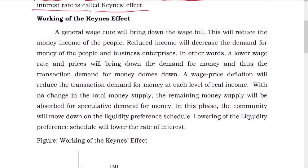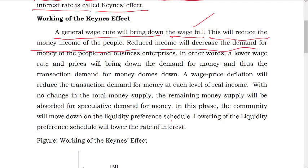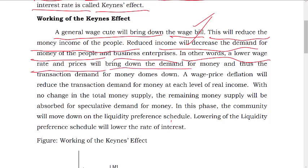The working of Keynes's Effect: a general wage cut will bring down the wage bill. This will reduce the money income of the people. Reduced income will decrease the demand for money of the people and business enterprises. In other words, lower wage rates and prices will bring down the demand for money, and thus the transaction demand for money comes down.